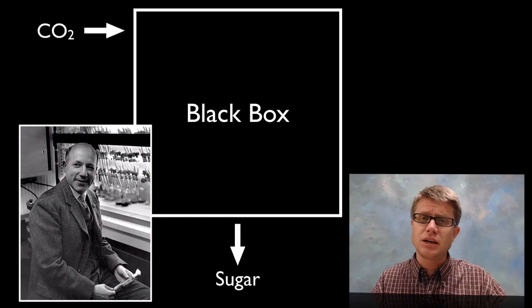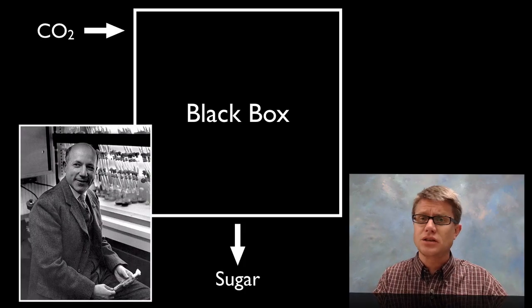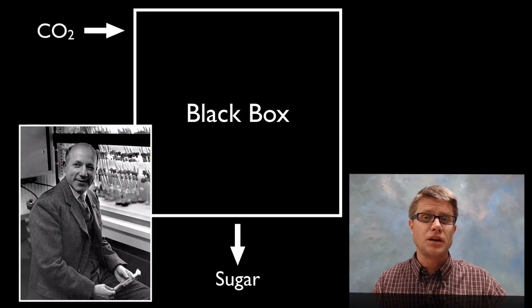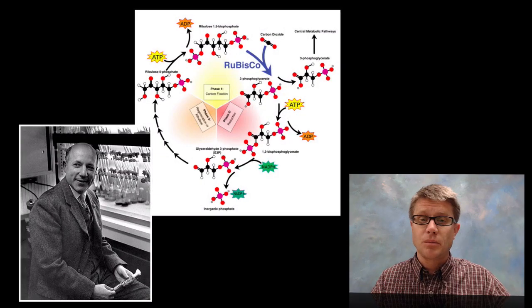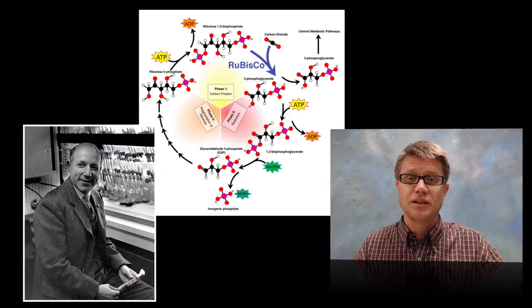We didn't know what was going on. And so what he did is he would stop the reactions at different points. He would figure out the intermediates of that. And then he came up with what we call now the Calvin cycle named in his honor.